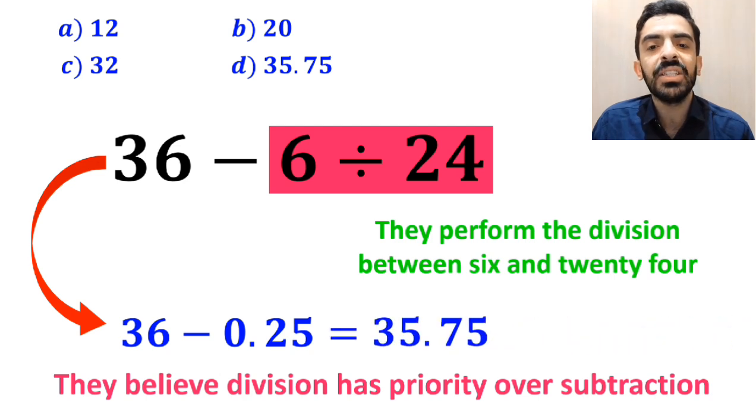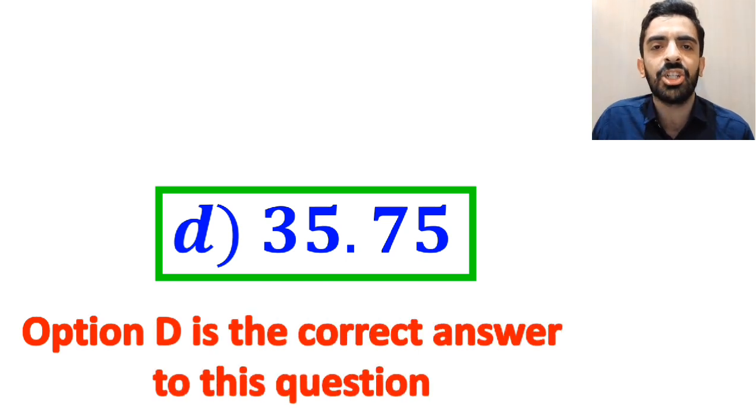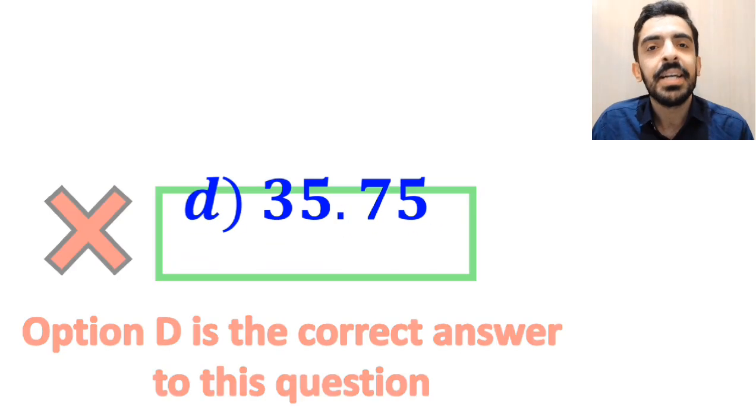Which ultimately gives them the answer 35.75, and immediately they conclude that option D is the correct answer to this question. But I have to say we were tricked, and it's not the correct answer.